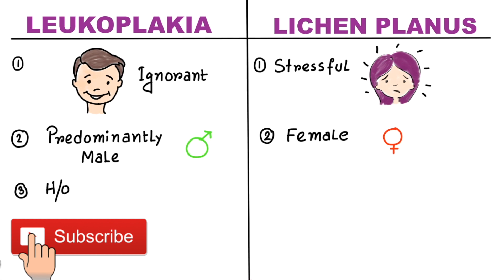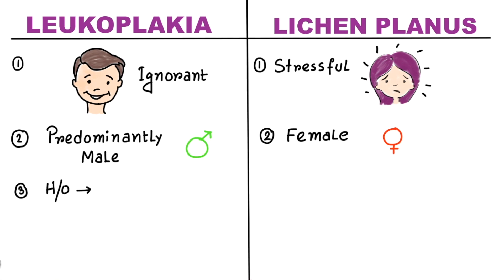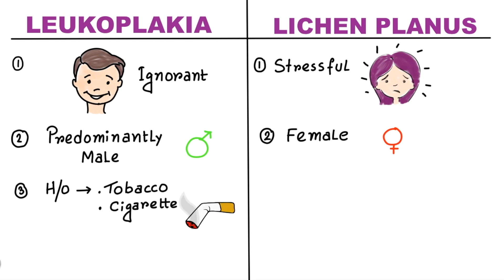The next point is habit history — ask the patient about their habits. Leukoplakia mostly occurs in those patients who have tobacco or smoking habits, or both. However, there is a special type called cryptogenic Leukoplakia, which occurs in non-smokers and non-tobacco chewers, and is actually an idiopathic Leukoplakia. Patients with Lichen Planus most of the time don't have any habit.